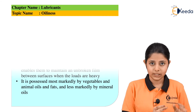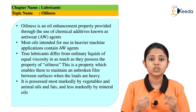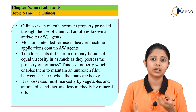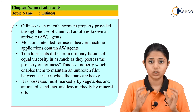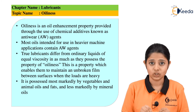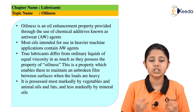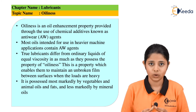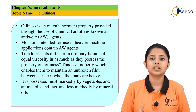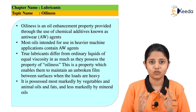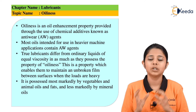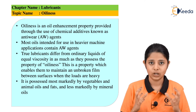The property of oiliness possessed by oils can be changed by human intervention. We can add anti-wear agents to increase the oiliness of an oil. Most oils used as lubricants in heavy machinery contain anti-wear agents. These agents enhance the oiliness of the oil, and because of that enhanced oiliness, the lubricant can be used in machines which have heavy wear and tear and significant friction.